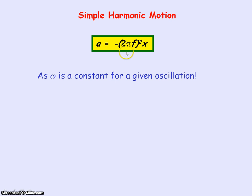As the angular frequency, that is 2 pi f, is a constant for a given oscillation, then that means the period and frequency are a constant for a given oscillation. And so period and frequency are independent of the amplitude of the oscillation.